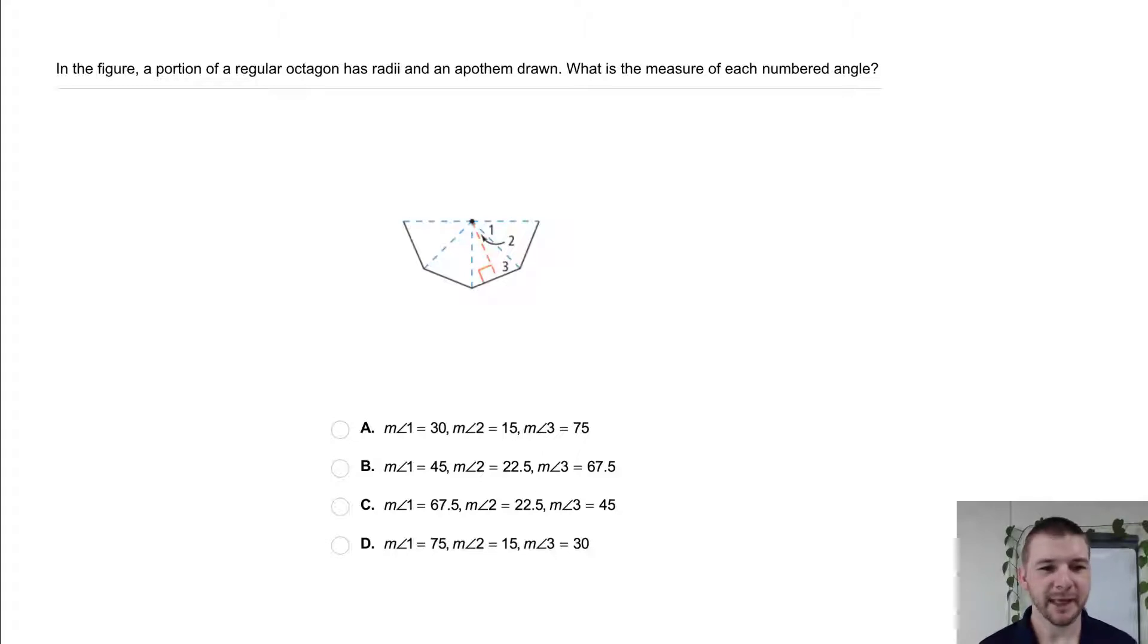Your turn. In the figure, a portion of a regular octagon has radii and an apothem drawn. What is the measure of each numbered angle?